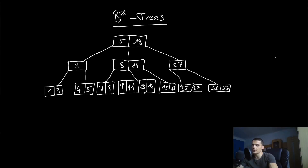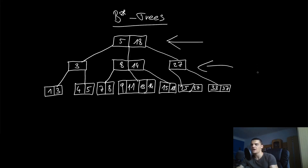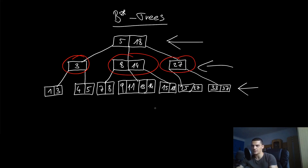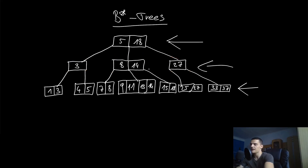Last but not least, let's talk about B+ trees, also called B-star trees. These are a little special: all the values in the internal nodes are used only for navigation. The B+ tree has the property that all actual values we're interested in are at the leaf nodes. Every non-leaf value — like 3, 8, 14, 27 — just guides us left, right, or center toward the actual data we want.